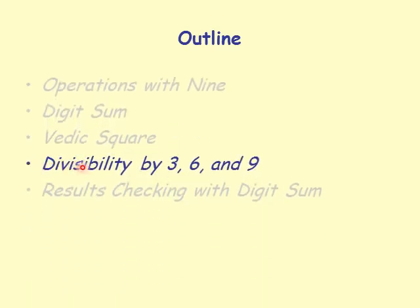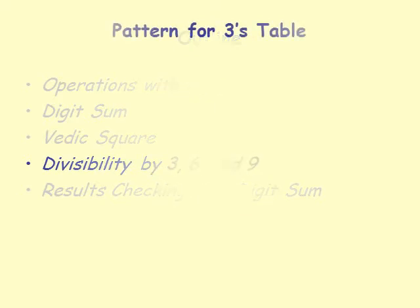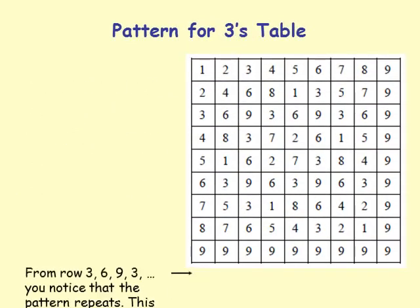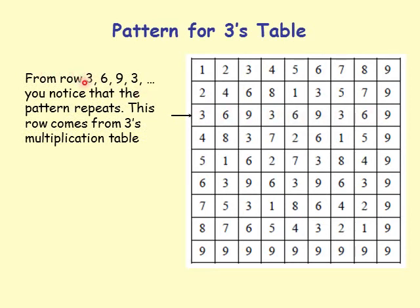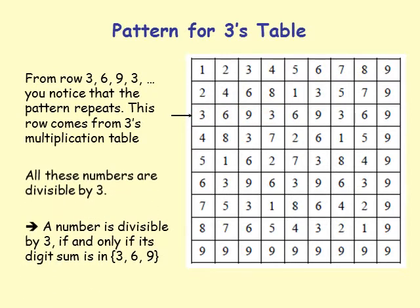Let's continue with the next section: divisibility rules by 3, 6, and 9 using the Vedic square. Look at the pattern for the 3's table: 3, 6, 9, 3, 6, 9 — repeating. This row came from the multiplication table for 3's. So a digit sum of 3, 6, or 9 means the number is divisible by 3. A number is divisible by 3 if and only if its digit sum is in the set {3, 6, 9}.